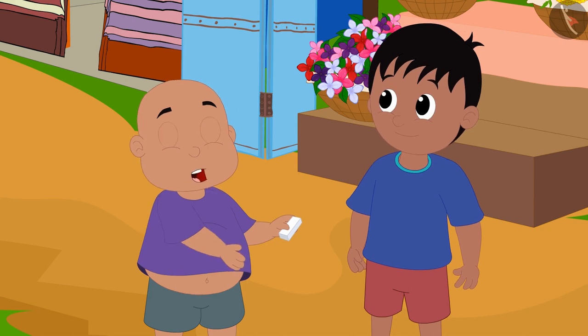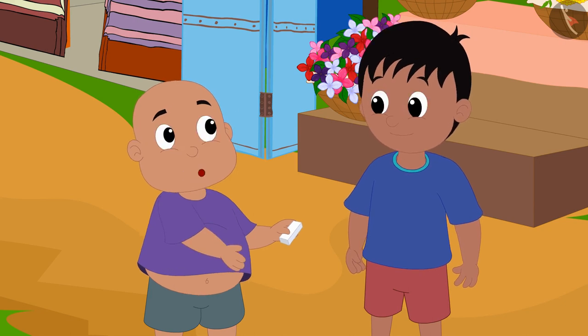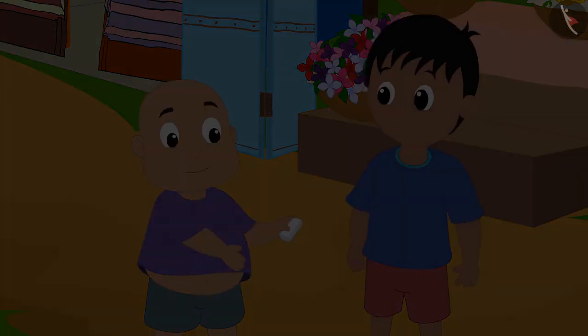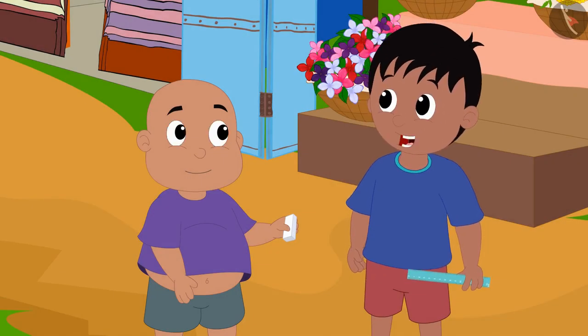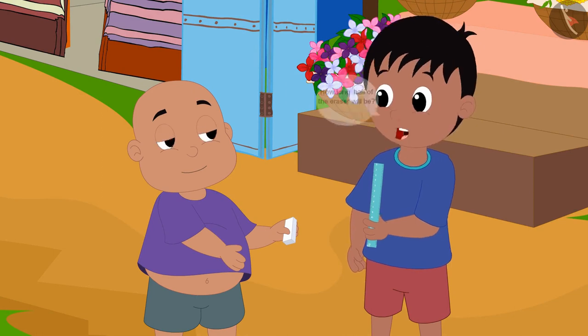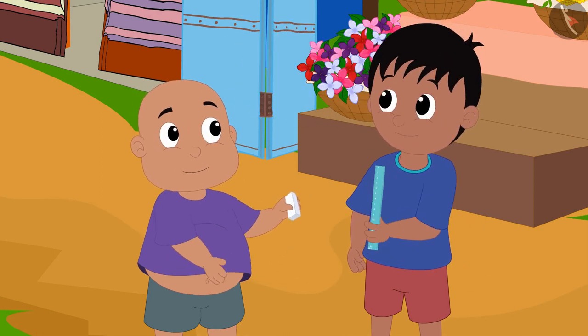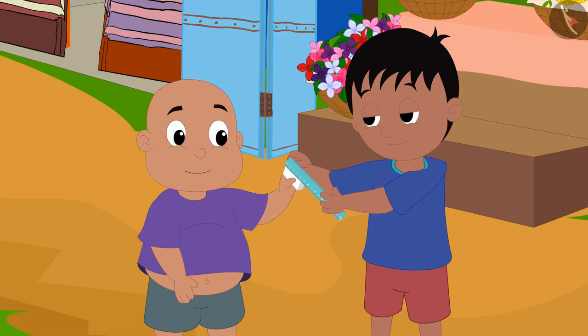Babloo said to Raju, 'Let us divide this eraser in two halves.' Raju replied, 'Okay, let's measure it using a ruler so that we know how long half of the eraser will be.' Raju measured the eraser with a ruler.